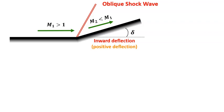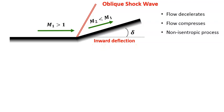We've learned about oblique shock waves before in our previous topic. Essentially, across a shock, the flow will decelerate and compress instantaneously, and the process across a shock is not isentropic.